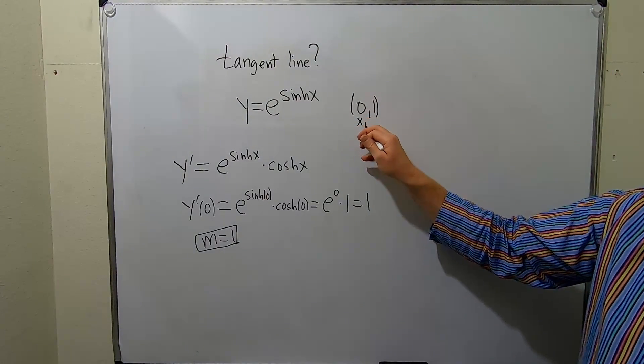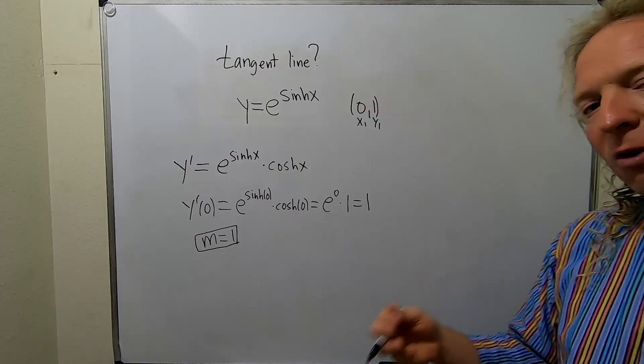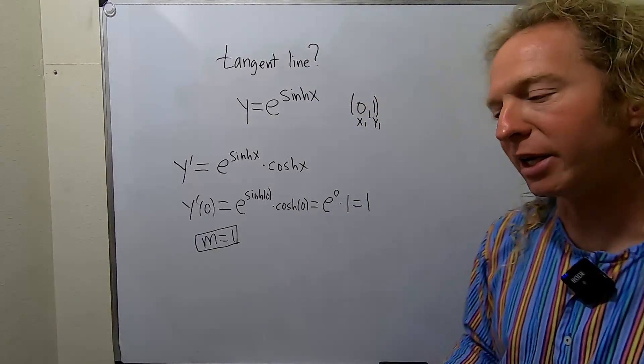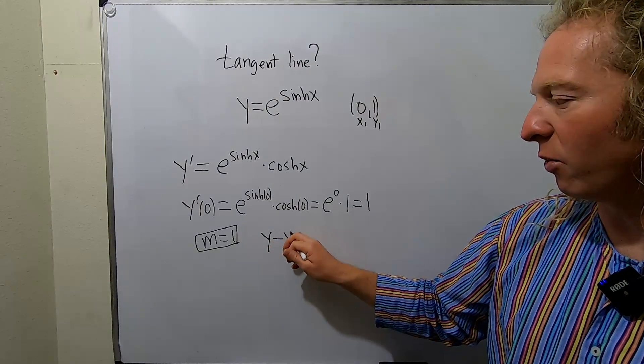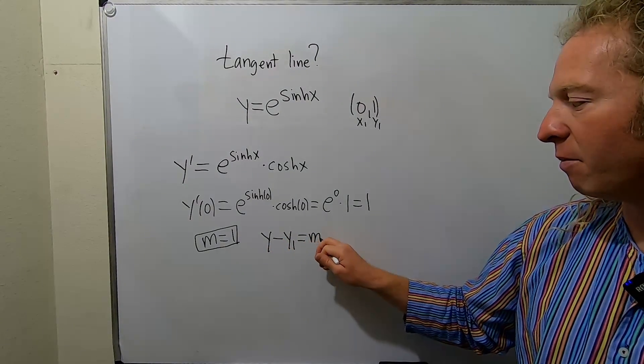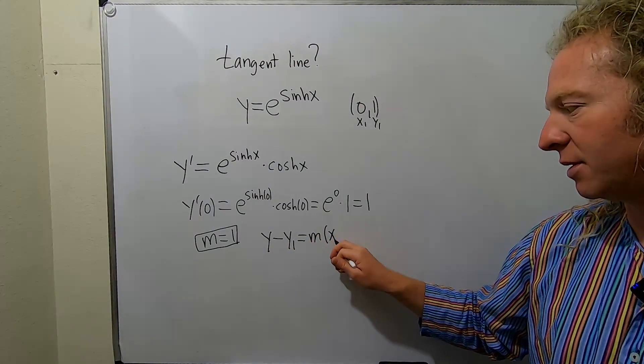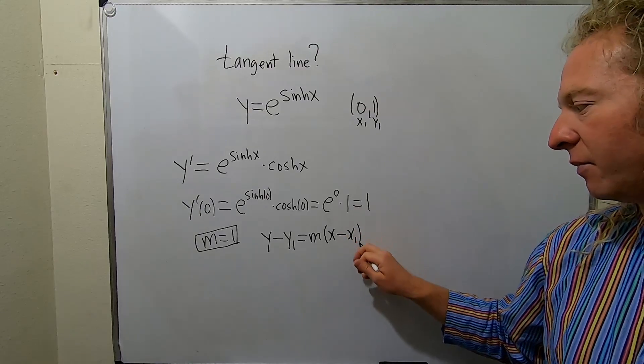And this is going to be our x₁ and our y₁. The formula we're going to use now for the tangent line is called the point-slope formula. So it's y - y₁ = m(x - x₁).